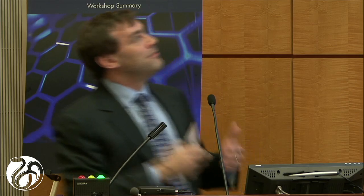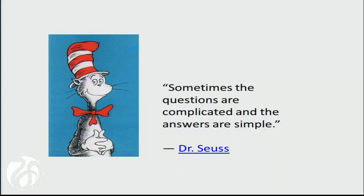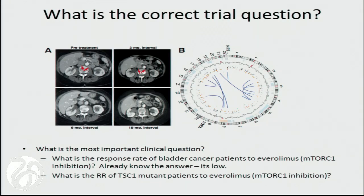There's a quote from the famous zoologist Dr. Seuss: sometimes the questions are complicated and the answers are simple. Maybe we're just asking the wrong questions for some of these clinical trials. The question really shouldn't be what's the response rate of bladder cancer patients to Everolimus — we already know it's low. It's low for every targeted inhibitor we've looked at. The question we should be asking is: what is the response rate of TSC1-mutant bladder cancer patients to Everolimus?